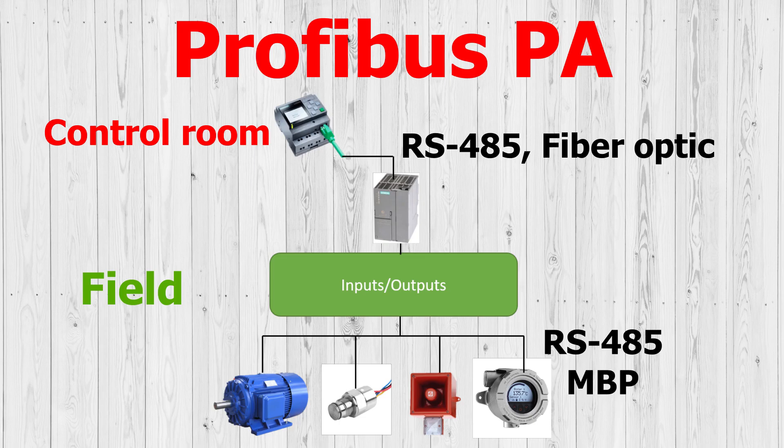However, Profibus PA still relies on Profibus DP to communicate with the control room, as many devices do not have special inputs for Profibus PA, so a coupler must be used to convert the Profibus PA signal to a Profibus DP signal. That's because the DP signal is faster.